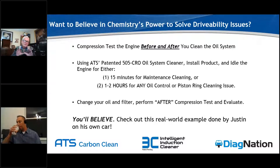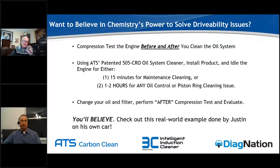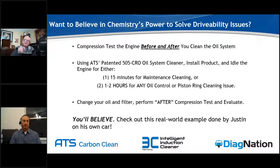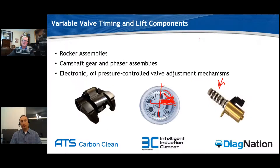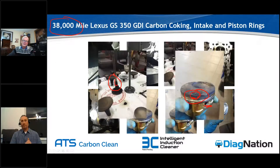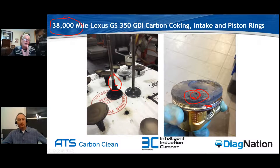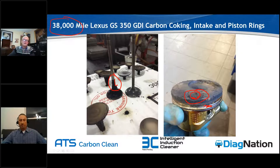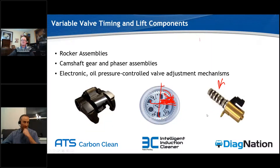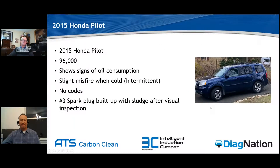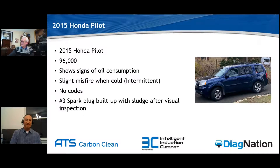If you want to believe in any chemistry's power to solve drivability issues, test it yourself and pull the data. Here's what we did on this car: we got a 15 to 20-minute cleaning. In the maintenance dose, we want to clean for 15 to 20 minutes — that's normal. But diagnostically, if you're going after oil control issues, especially the rings, what we need to do is run this cleaner at hot idle for one to two hours of run time. In 90% of the cases or more, that is going to free these rings up like brand new. Wait till you see what we did on the case study car. Justin, you want to add anything before we roll into this?